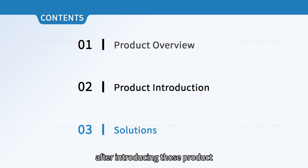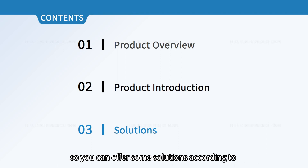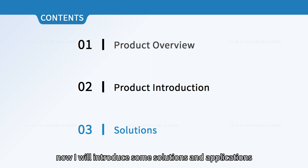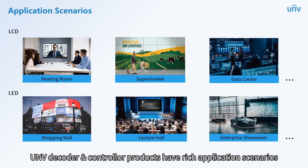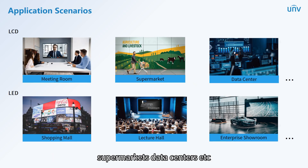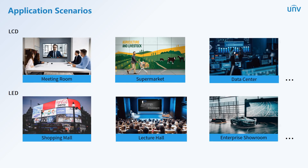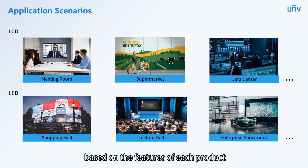After introducing those products, you can now know some features and offer solutions accordingly. UNV decode and control products have rich application scenarios: they can be used with LCD monitors for meeting rooms, supermarkets, data centers, etc., and can be used with LEDs for supermarket video walls and lecture halls. Next, different solutions will be described based on the features of each product.